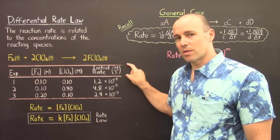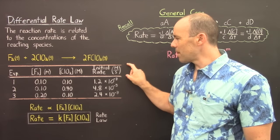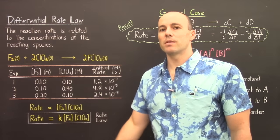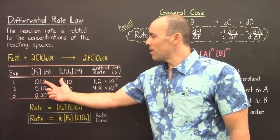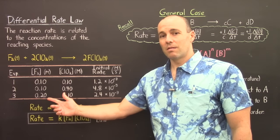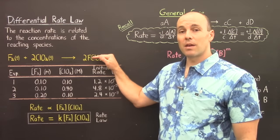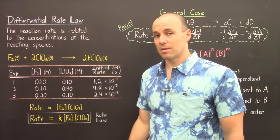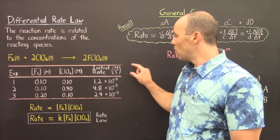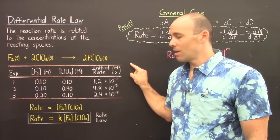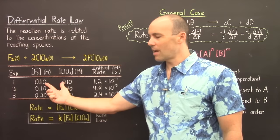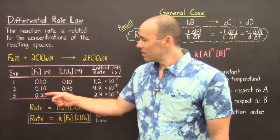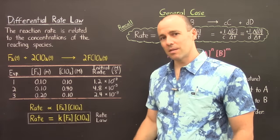The initial rate was determined because if you try to determine the rate at some further point during the reaction, the concentrations have diminished, and once products appear, the reverse reaction can start to occur and complicate matters. So to avoid those complications, we're only interested in the initial rates — right at the beginning, we know exactly how much reactant we have and exactly how fast it's going.